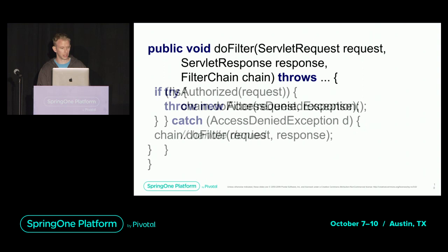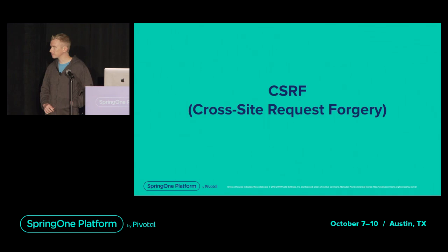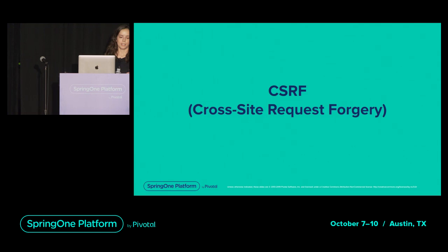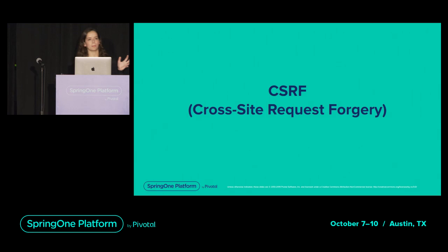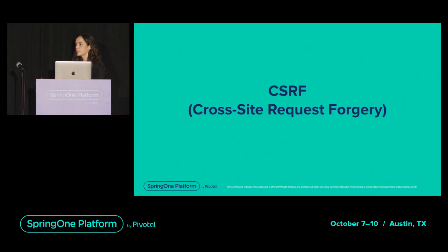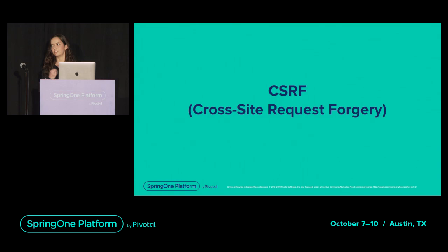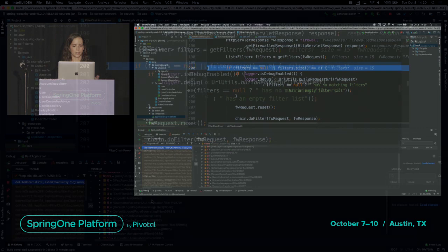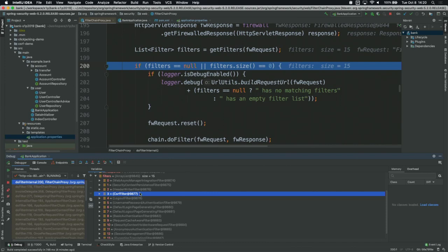Rob just explained how Spring Security has this filter chain — a list of predefined filters meant to keep your application more secure. We're going to look into how each of these individual filters work and what their purpose is. We're not going to go into all of them, but we'll start with a couple and show how they make your application more secure, and why you want them there instead of disabling them. The fourth item in the Spring Security filter chain is a filter called CSRF filter, which is meant to prevent cross-site request forgery attacks.